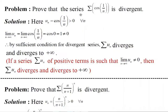Prove that the series Σcos(1/n) is divergent. Here, u_n is taken as cos(1/n), which is positive for all n, and hence the given series is a series of positive terms. Now let us find the limit of u_n.